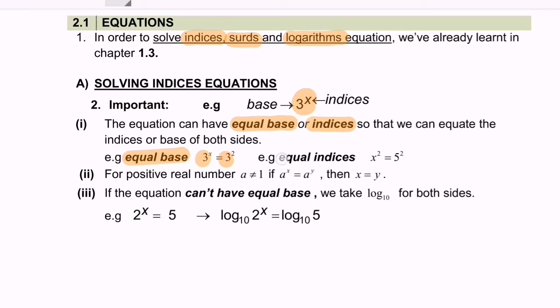Another situation, equal indices. We refer to the example x squared is equal to 5 squared. For this case, we have equal indices which is equal to 2. So from here, we can know the answer x is equal to 5.